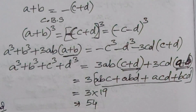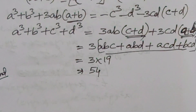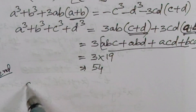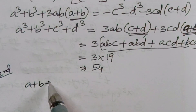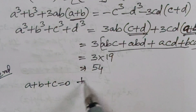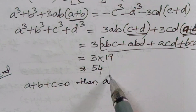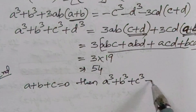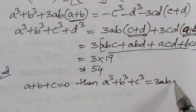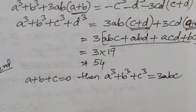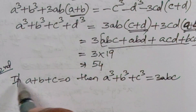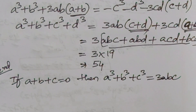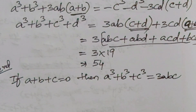Now, the second model. We know that if a + b + c = 0, then a³ + b³ + c³ = 3abc. We know this identity: if a + b + c = 0, then a³ + b³ + c³ = 3abc.